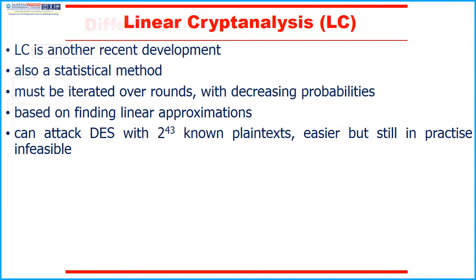The most recent development is linear cryptanalysis. This attack is based on finding linear approximations to describe the transformations performed in DES. This method can find the DES key given 2^43 known plaintext, compared to 2^47 chosen plaintext for differential cryptanalysis. Although this is a minor improvement — and it may be easier to acquire known plaintext rather than chosen plaintext — it still leaves linear cryptanalysis infeasible as an attack on DES.